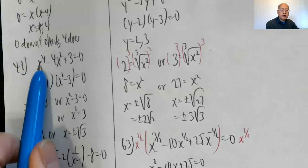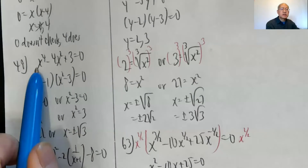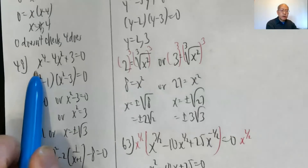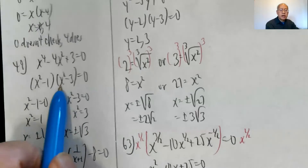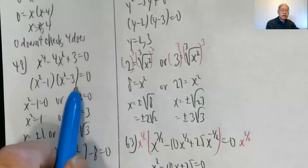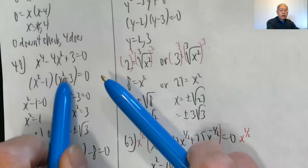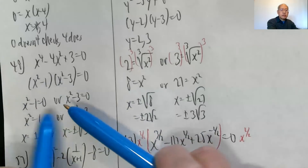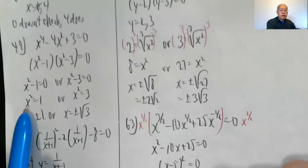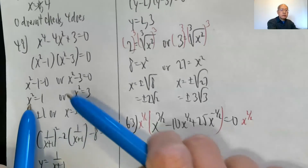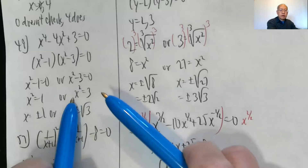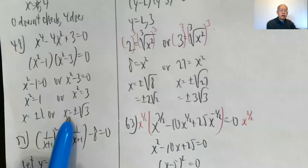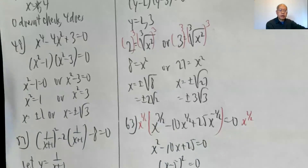For the next problem, x to the fourth can be thought of as x squared squared, making it a quadratic in x squared. So it factors as x squared minus one times x squared minus three equals zero. Therefore x squared minus one equals zero or x squared minus three equals zero. Adding gives x squared equals one or x squared equals three. Using the square root property: x is plus or minus one or plus or minus radical three.